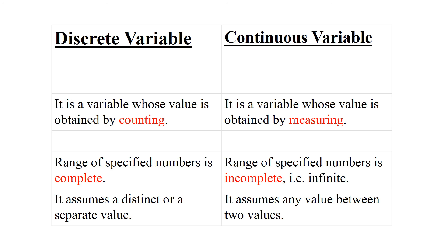Another difference: for a discrete variable, the range of specified numbers is complete, while for a continuous variable, the range of specified numbers is incomplete. Finally, a discrete variable implies a distinct or separate value, while a continuous variable lies between any two values.